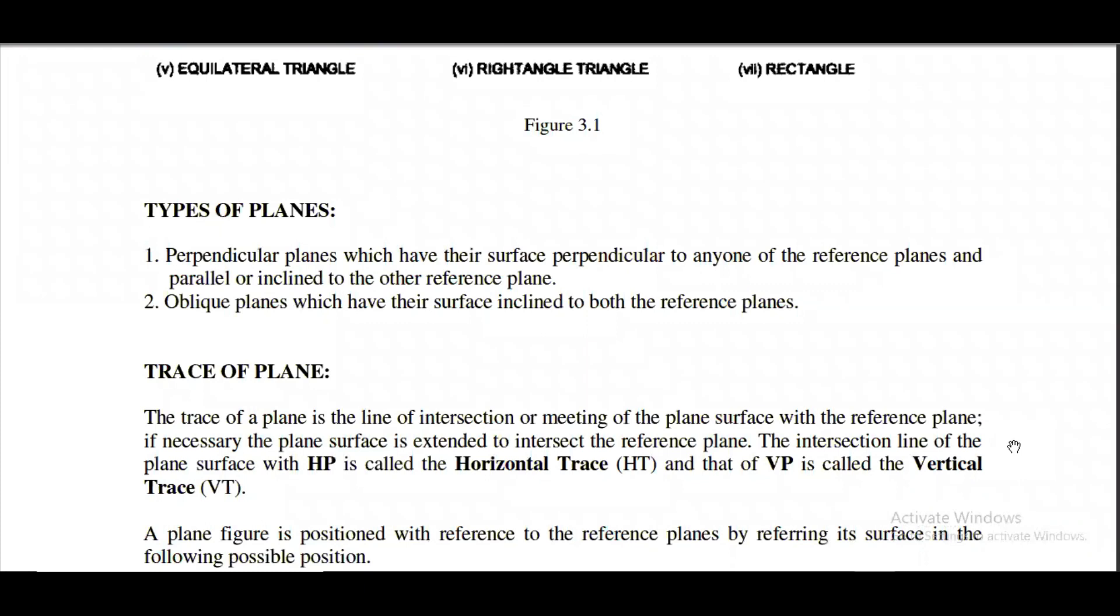What are the different types of planes? Till now we have discovered different types of plane figures or shapes which we are going to deal on. We will see what are the different types of planes we use in the drawing: these are mainly perpendicular planes and oblique planes. Perpendicular planes have surfaces perpendicular to the plane surface, and oblique planes are inclined to both reference planes.